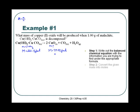Now we do step two: convert the given mass into moles. We've been given one gram of malachite, so we're going to convert that into moles. The number of moles equals mass divided by molar mass — one gram divided by 221.13 — giving us 0.00452 moles of malachite.